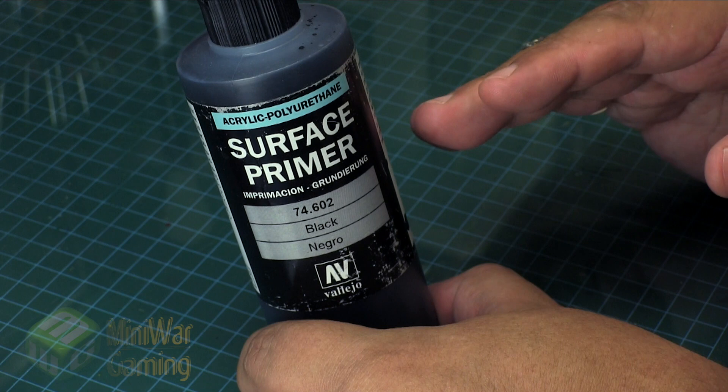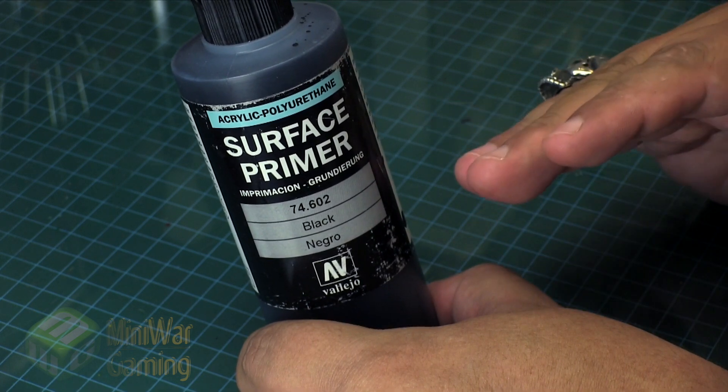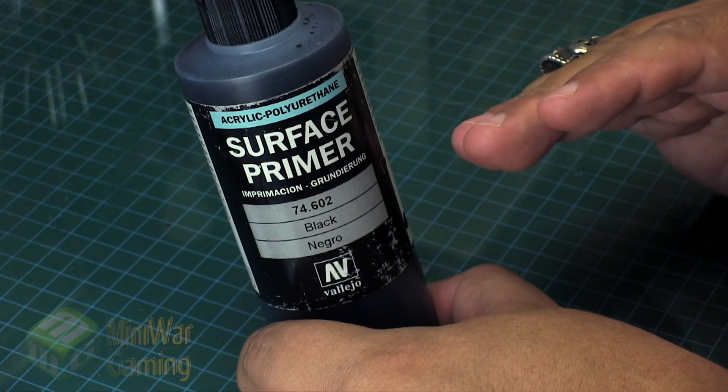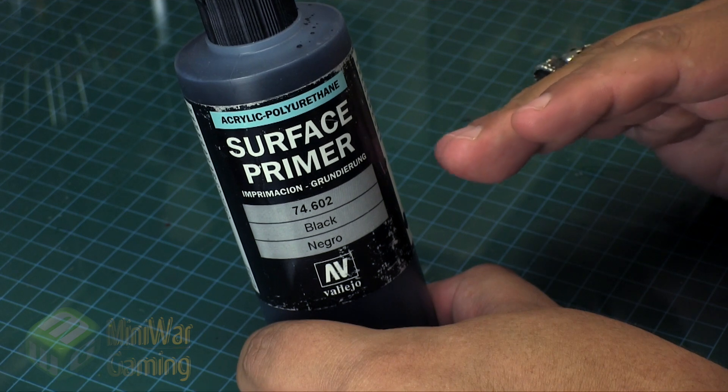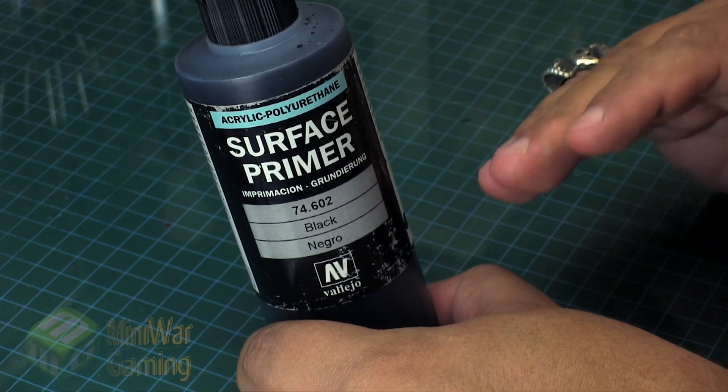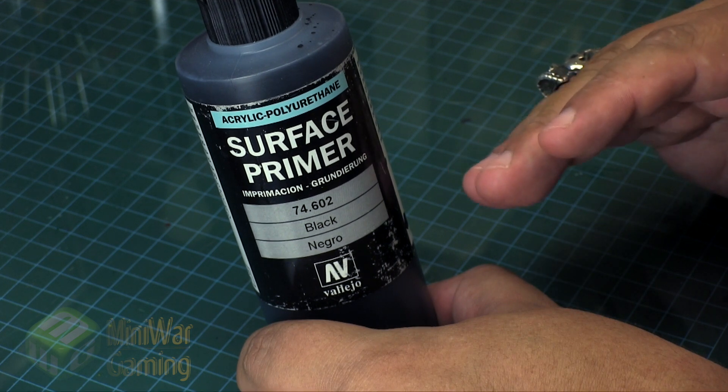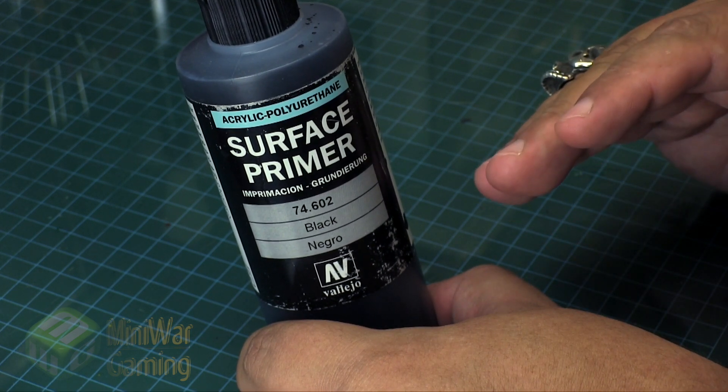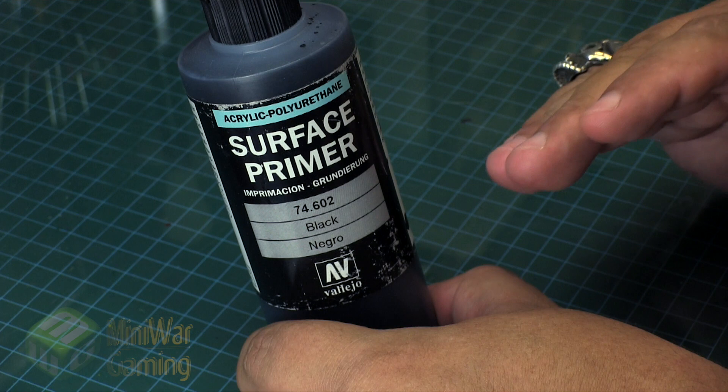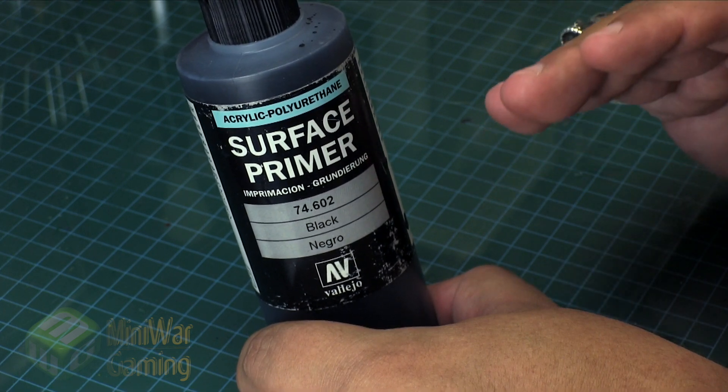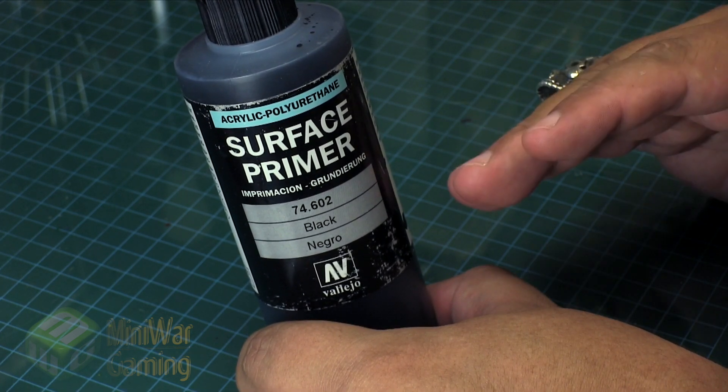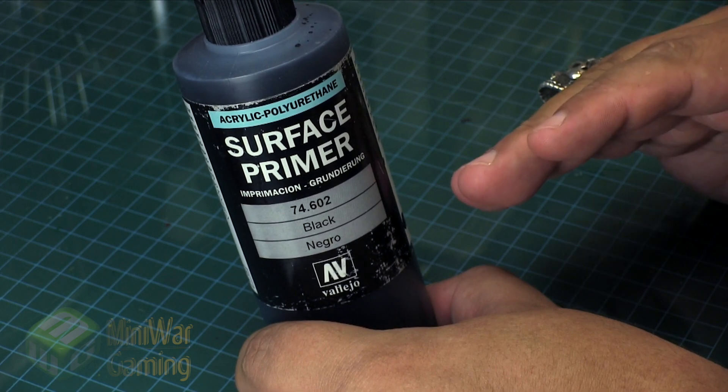But the main purpose of the primer is that you want a surface for the paint to adhere to onto the model. It's not really there to provide color - it's just there to provide surface. With black primers, the tendency is to over prime a lot of times on a model.